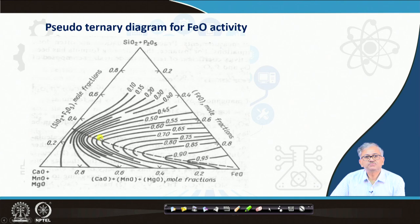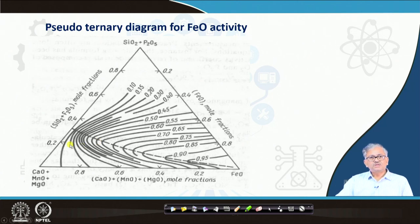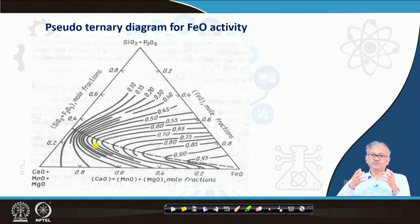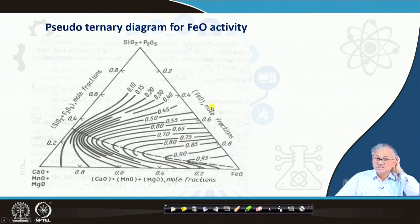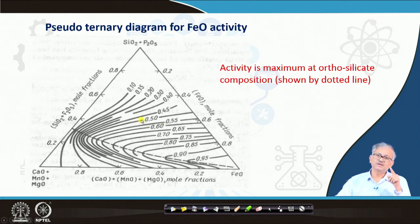From the ternary diagram, the iso-activity lines of FeO can be found. One corner is (SiO2 + P2O5), another corner is (CaO + MnO + MgO), and the third is FeO. The dotted line refers to the dicalcium silicate composition - 2CaO·SiO2 - the orthosilicate composition. At this composition, SiO2 is totally neutralized by CaO, forming strong dicalcium silicate compounds. Then FeO in the slag remains relatively free and its activity is maximum along that line. From this ternary diagram, for a particular slag composition, one can find the FeO activity and then calculate the chemical oxygen potential of the slag.